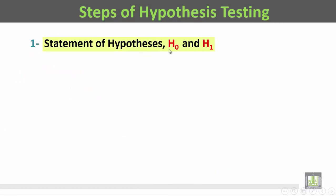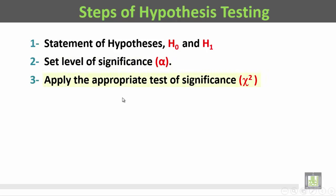Statement of the hypotheses: the null hypothesis and the alternate hypothesis, H₀ and H₁. The second step is to set the level of significance, alpha (α). The third step is to apply the appropriate test of significance, in this case it is the chi-square (χ²).